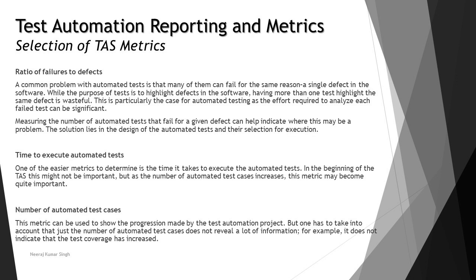We measure the ratio of failures to defect to understand how many tests failed and what the reason behind that was. If a defect was identified but there were several failures all caused by only one reason, then automation is not efficient — we wasted time on many failures but failed to capture different defects. We want to capture as many different defects as possible, not repeated failures for the same defect. The solution lies in the design of automated tests and their selection for execution.